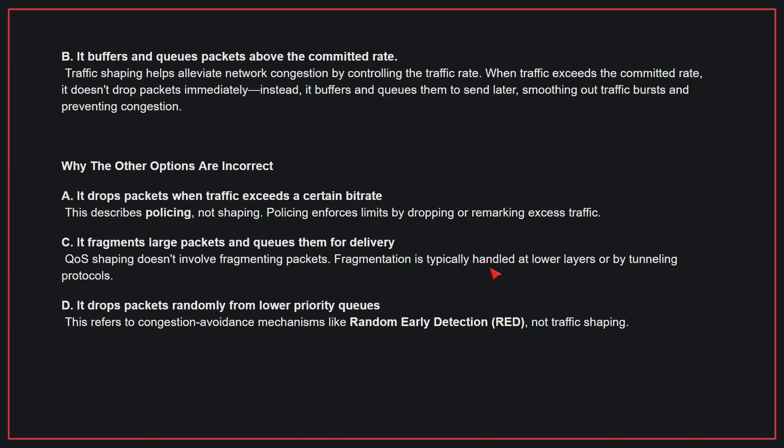Why the other options are incorrect? A: This describes policing, not shaping — policing enforces limits by dropping or remarking excess traffic. C: QoS shaping doesn't involve fragmenting packets; fragmentation is typically handled at lower layers or by tunneling protocols. D: This refers to congestion avoidance mechanisms like random early detection, not traffic shaping. Therefore, the correct answer is B.